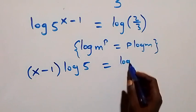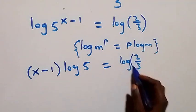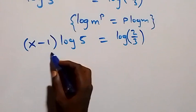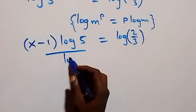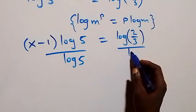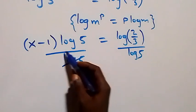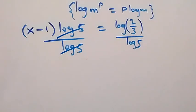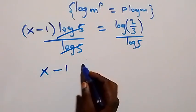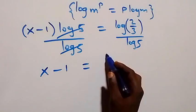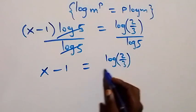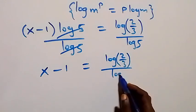Next, we divide both sides by log 5. Log 5 cancels on the left, so we have x minus 1 equals log(2/3) over log 5.